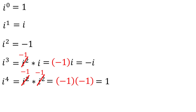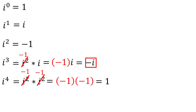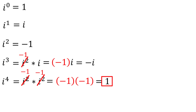It turns out from here, i just cycles through the same four values: i, negative 1, negative i, and 1, forever and ever as we increase the power on i. Let's do a few more so you can see the pattern. i to the fifth power is i to the fourth times i, or 1 times i, which is just i.